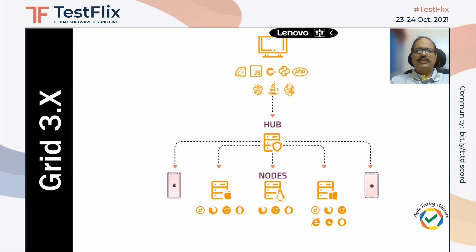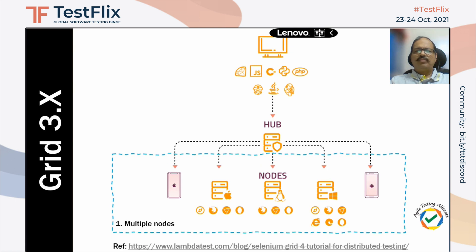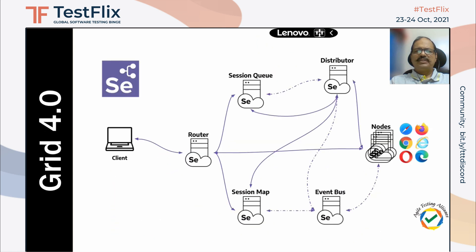So this is where we are. Talking about Grid 3, we have multiple nodes in the client. Grid 4 basically has its own more complicated structure, but the intent is to increase scalability and stability. We've got multiple moving components — that's why we say it is a distributed architecture.